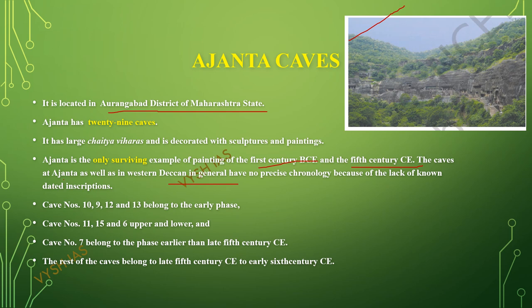The caves in Ajanta and in the Western Deccan do not have any particular chronology because no dated inscription has been registered on the caves. Caves number 9, 10, 12, and 13 belong to the earlier phase. Cave numbers 11, 15, and 6 belong to the upper and lower phases. Cave number 7 belongs to a phase earlier than the late 5th century CE, and the rest of the caves belong to the 5th to 6th century CE.